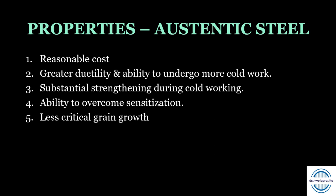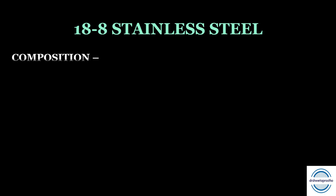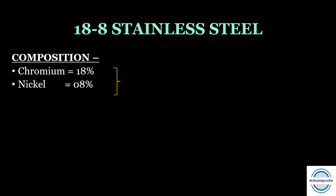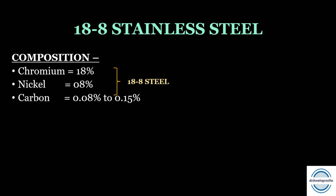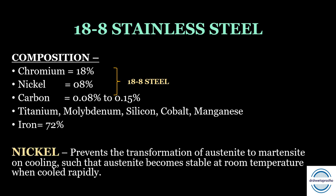The 18-8 stainless steel — separately asked in theory and MCQs — is named for its composition: chromium 18% and nickel 8%. Carbon content is 0.08–0.15%. Other metals present include titanium, molybdenum, silicon, cobalt, manganese, and iron (72%). The role of chromium we have discussed. Nickel prevents the transformation of austenite to martensite on cooling, such that the austenite form becomes stable at room temperature when cooled rapidly.